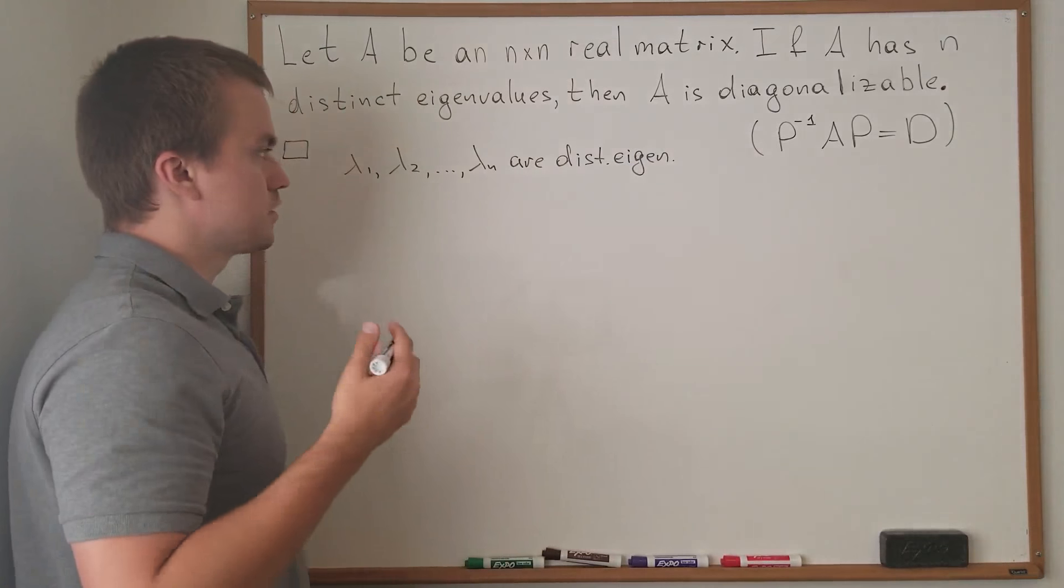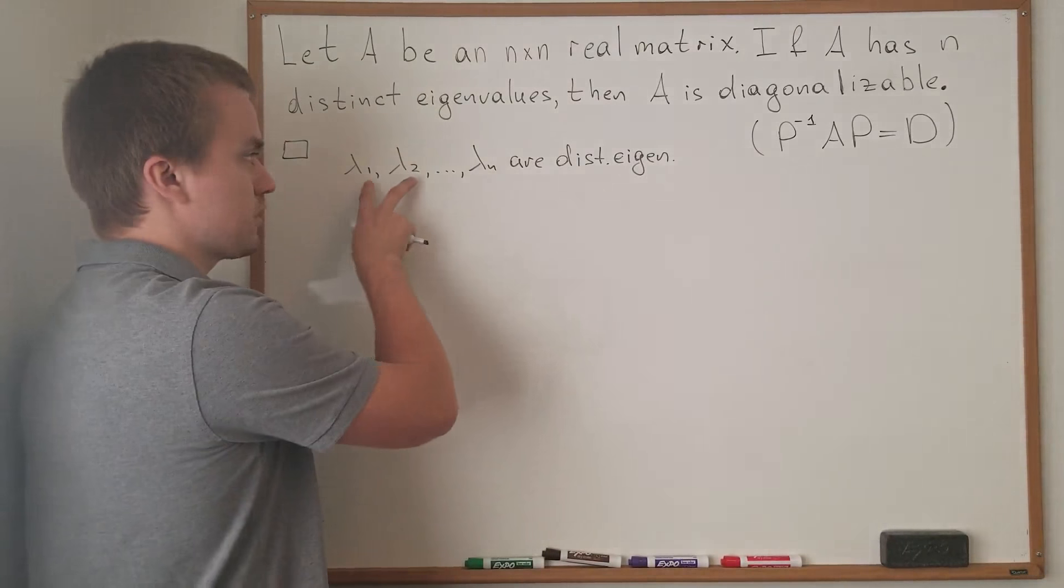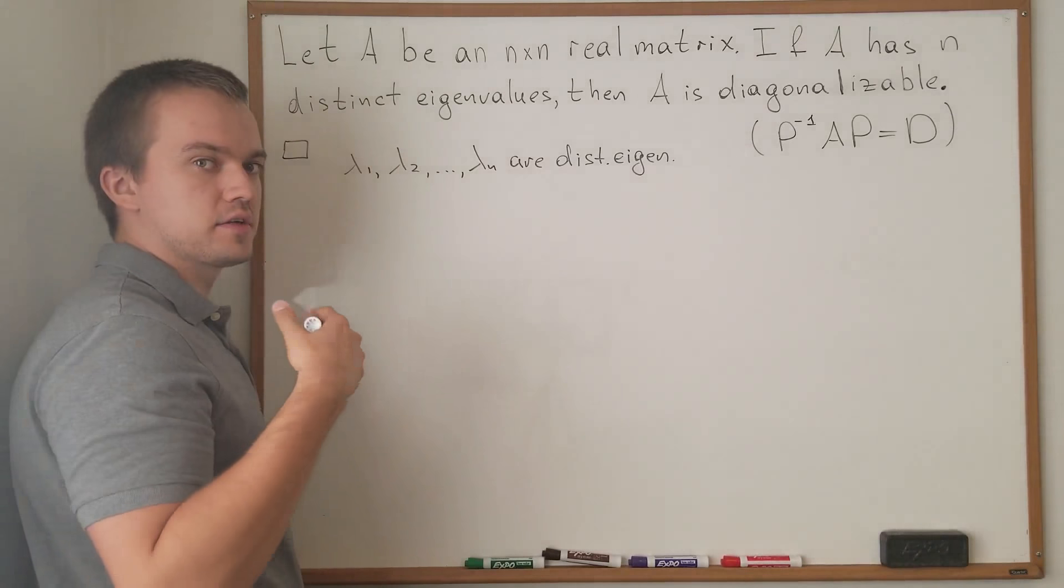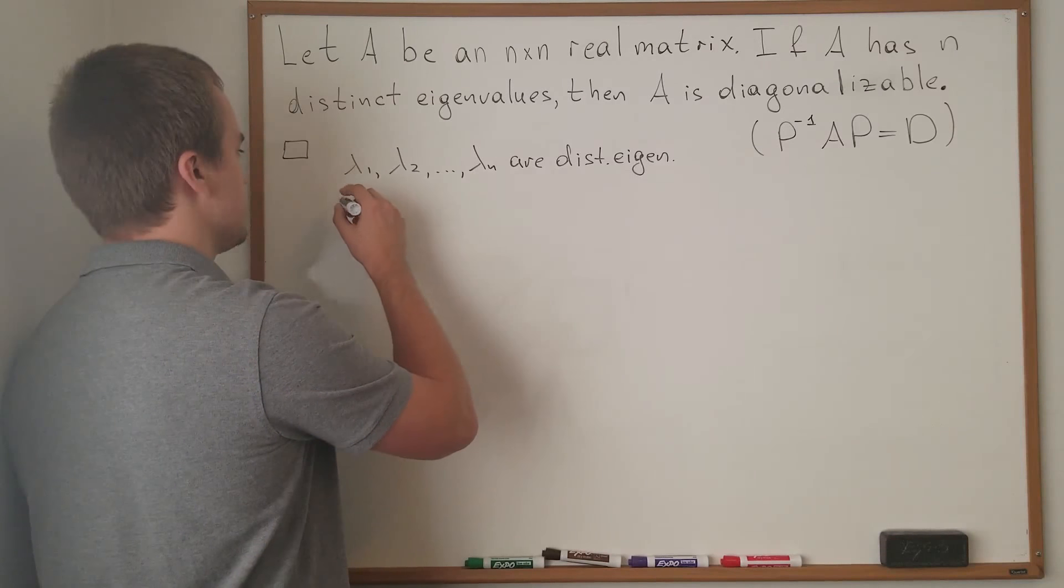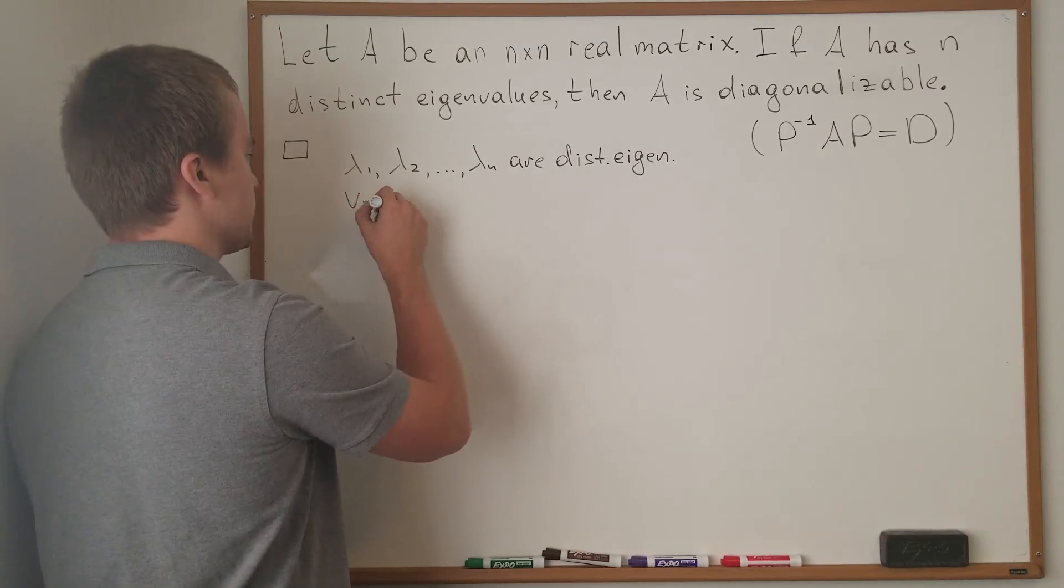So what does it mean? It means that for the corresponding eigenvalues, we can find the corresponding eigenvectors. In other words, let's say V1 and Vn are corresponding eigenvectors.